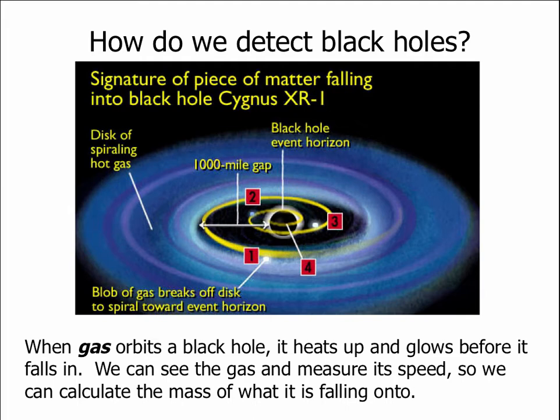So here's an artist's picture of a black hole called Cygnus X-1. This black hole is swallowing gas from a neighboring star, and that gas, as it goes into the black hole, spirals around, and it makes a disk. This disk, the gas particles are bumping into each other, and so they heat up as they fall in.